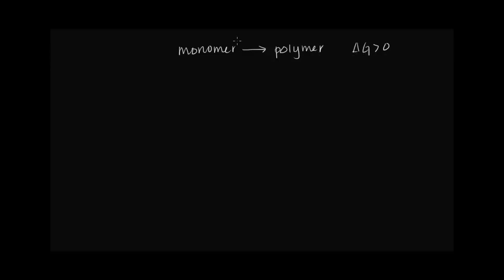Our body resolves this challenge by coupling this reaction with one that has a favorable delta G value — that is, a delta G value less than zero. Our body uses the energy currency of the cell, ATP. Its reaction with water has a very favorable, very negative delta G value, and when we break it down we form ADP and a free phosphate group.